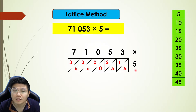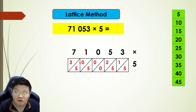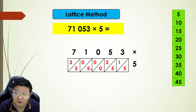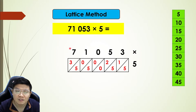Five times three — one, two, three... fifteen — so we put one and five. Next, five times five, which is twenty-five — put two, five. Five times zero, which is zero — put zero, zero. Five times one, which is five — put zero and five. Be very careful: if you mistakenly put five-zero it means fifty, so when the result is a single digit, make sure you put a zero in front, followed by the digit.